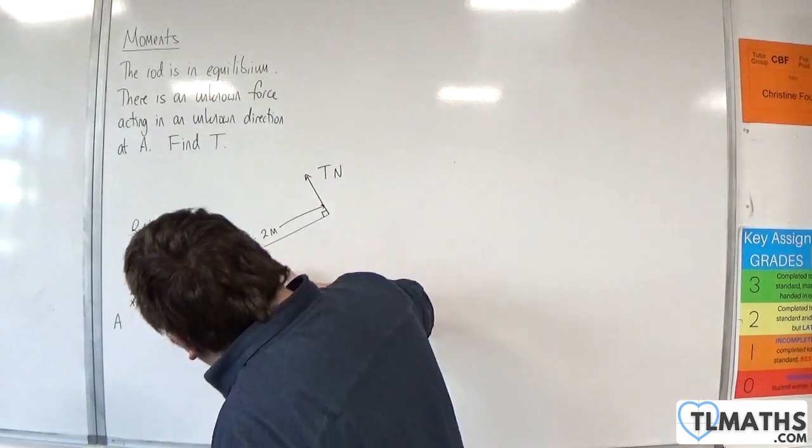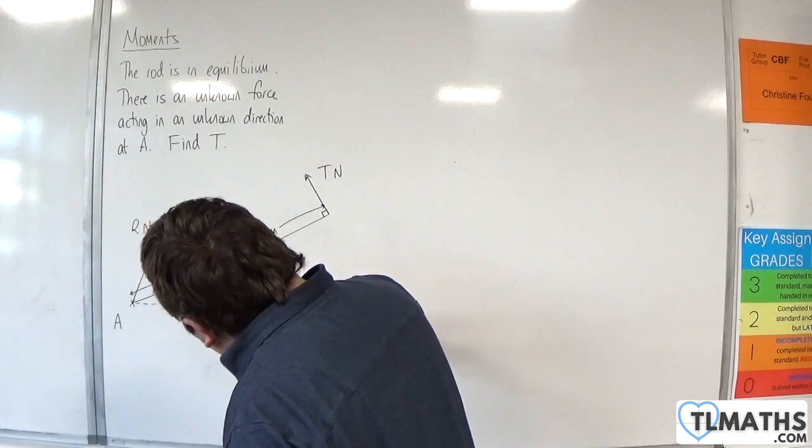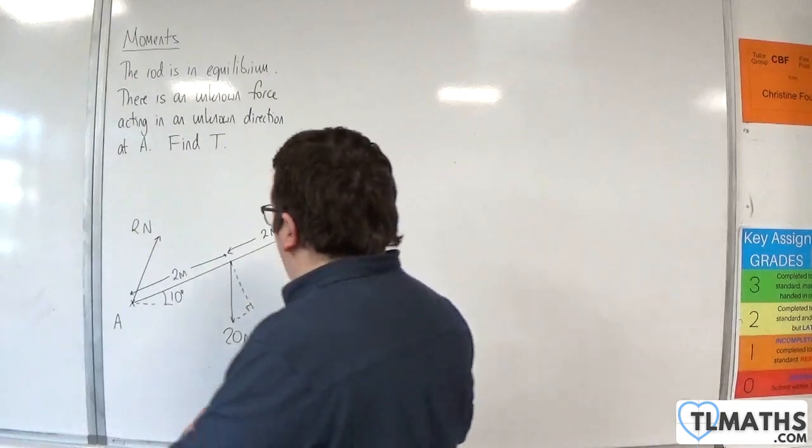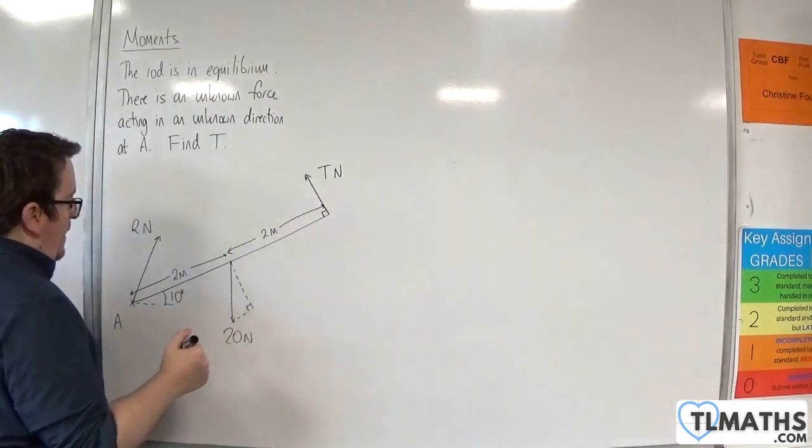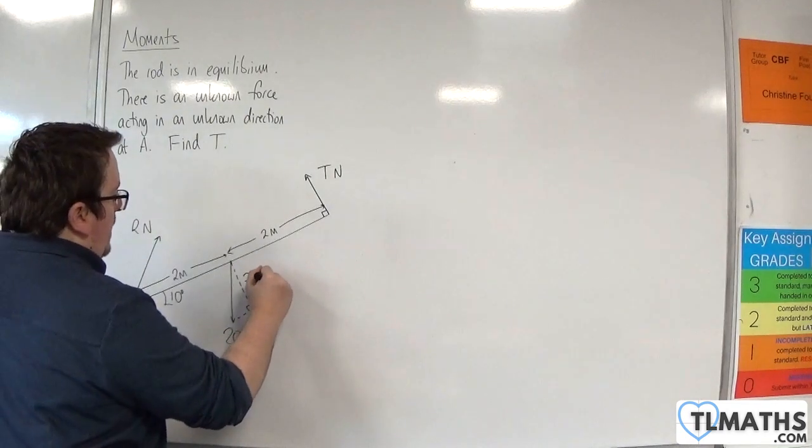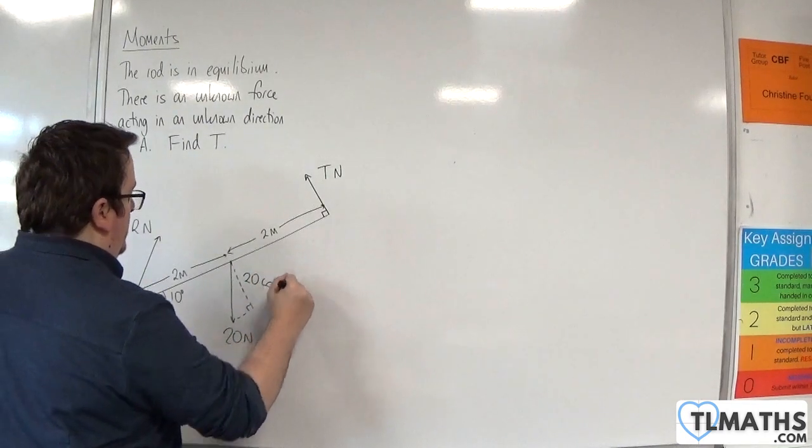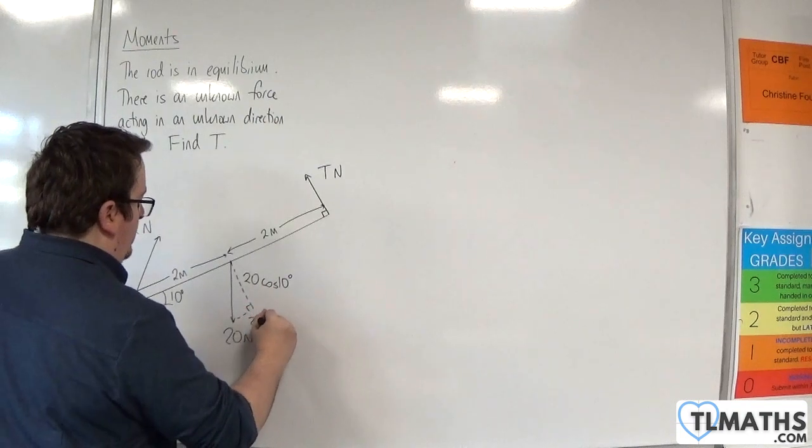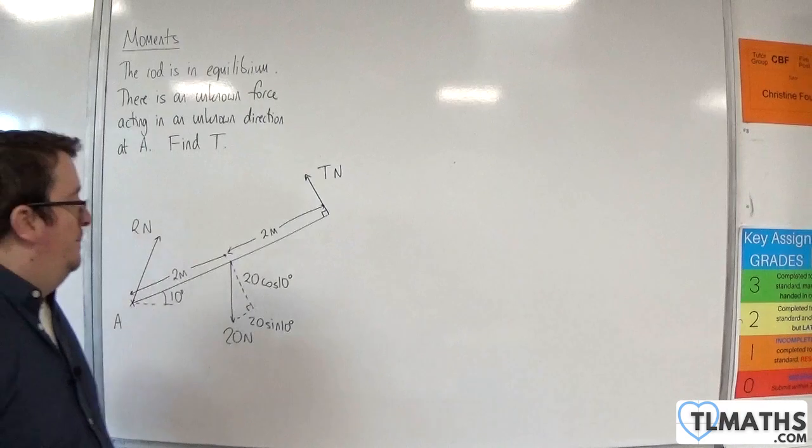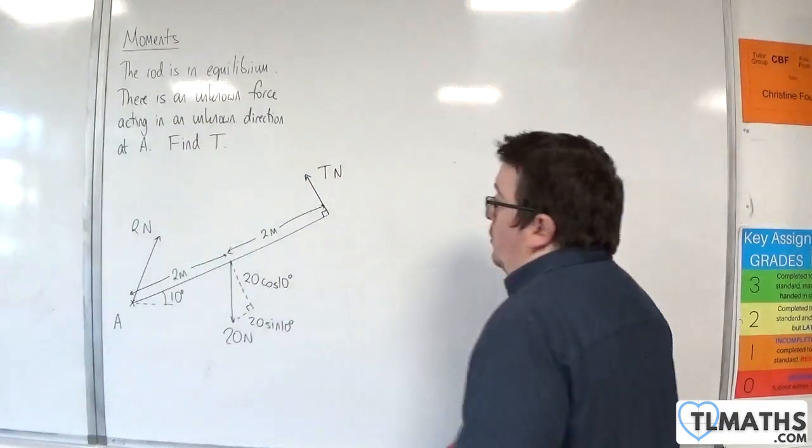I've drawn that very well. I'd complete a right-angled triangle, and then I would have, well that's 10 degrees, so this would be 20 cosine 10 degrees, and this would be 20 sine 10 degrees. And I would still do that, even though we're working with a moments problem.